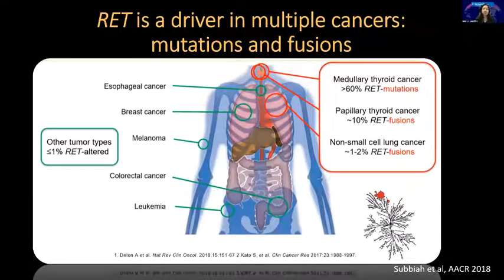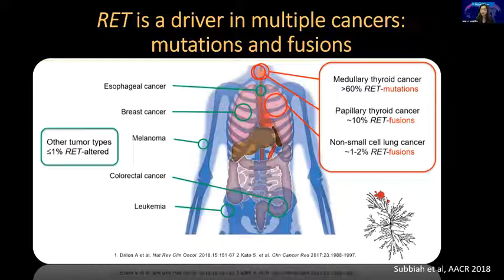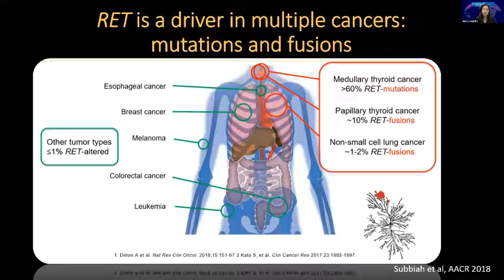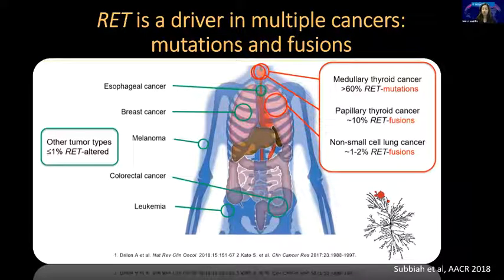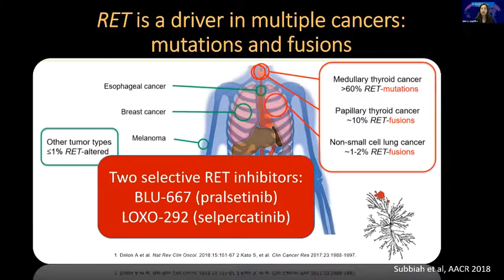RET is a great target — seen both in medullary and in follicular-derived thyroid cancers as fusions, so we do look for these in those patients. Dr. Nikiforov spoke about fusions and how there may be some indications on the pathology suggesting your patient has a fusion. There are two selective RET inhibitors: pralsetinib and selpercatinib.